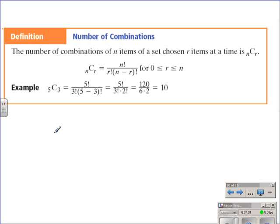Here's the definition for the number of combinations. The number of combinations of n items of a set chosen r items at a time is nCr, n factorial divided by r factorial times the quantity n minus r factorial.